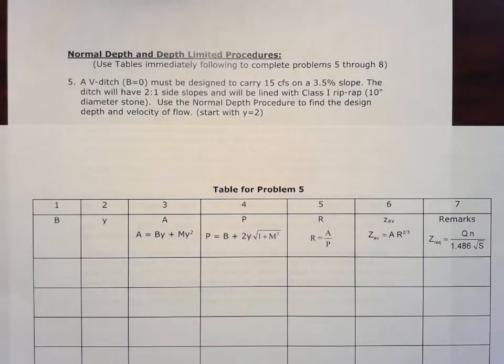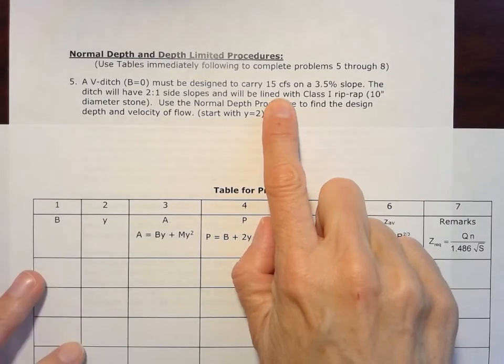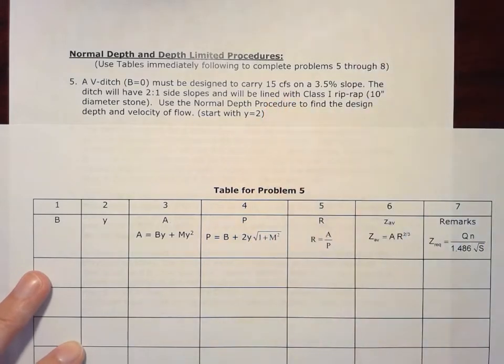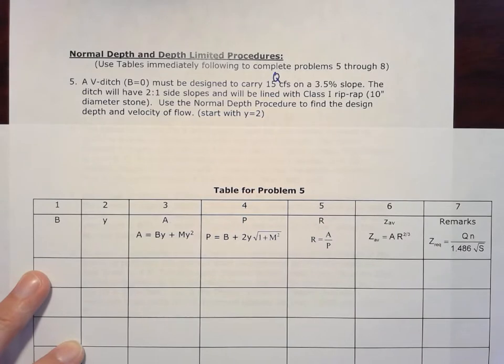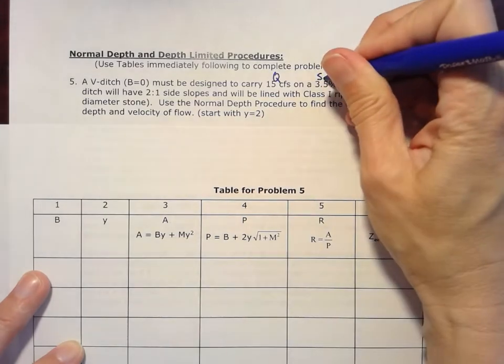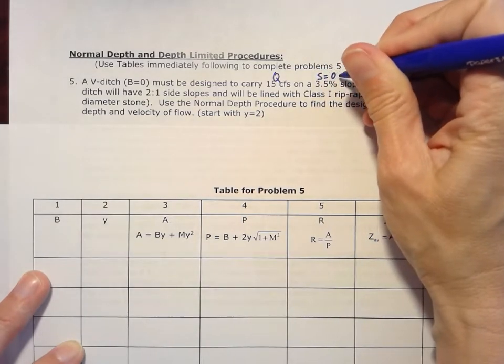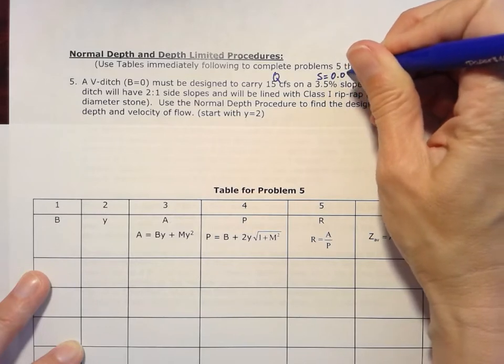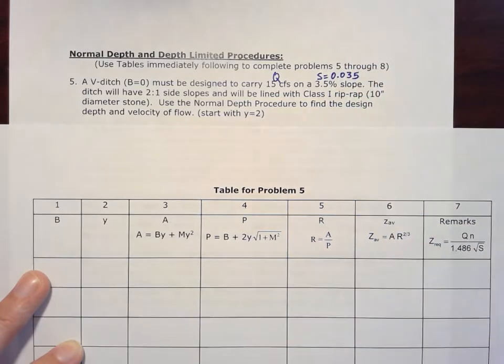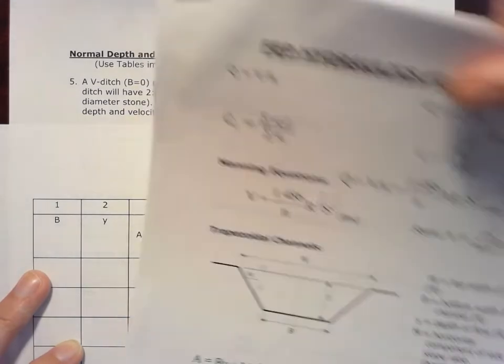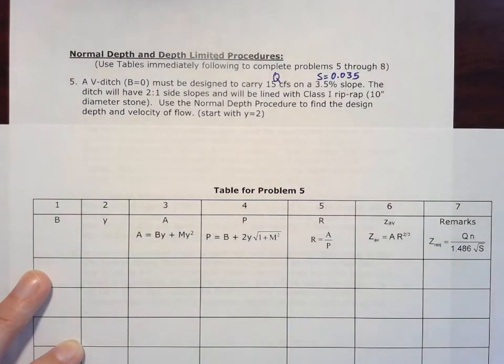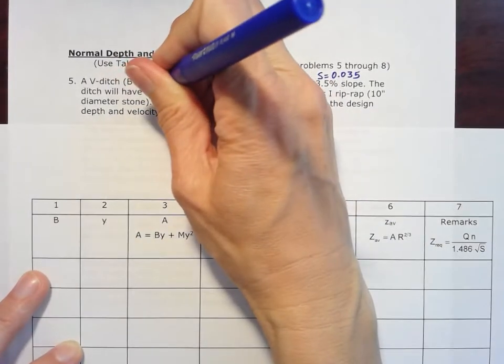We have to design it so it carries 15 cubic feet per second. So that's our flow rate, we call that Q, on a 3.5% slope. So we're going to convert that into a decimal, 3.5% becomes 0.035. The ditch has to have 2 to 1 side slopes. Our side slopes are M to 1, and so if it's 2 to 1, then that M value becomes 2.